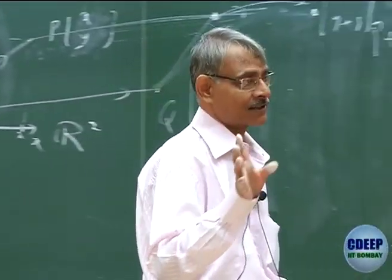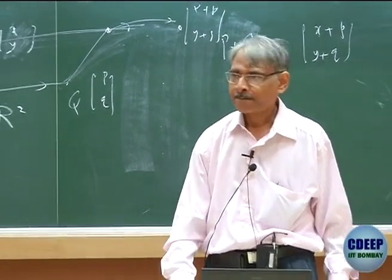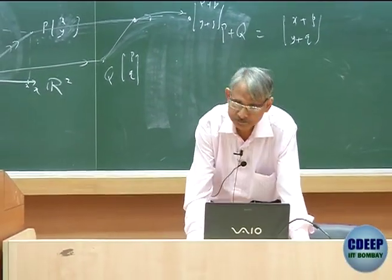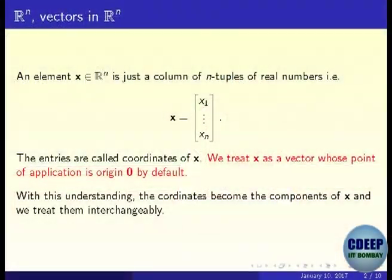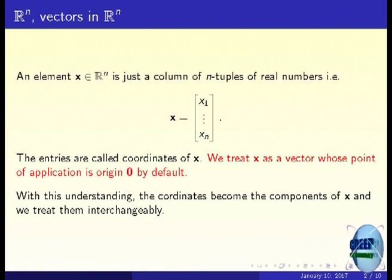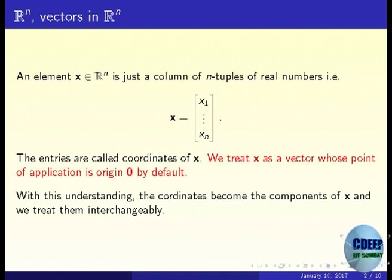Points of Rn are vectors by default. When we add two vectors, we are using the parallelogram law of addition — this is genuine vector addition. With this understanding, coordinates become components and we treat them interchangeably: sometimes we call them components, sometimes coordinates, just like sometimes we call a point a vector and vice versa. This is exactly the sum we defined entry-by-entry.